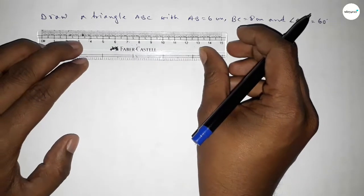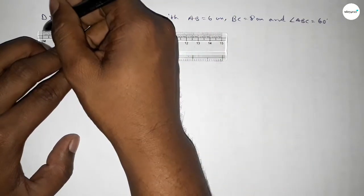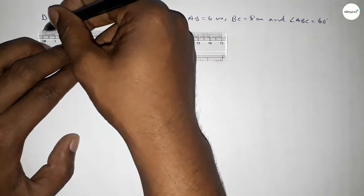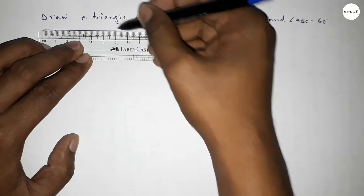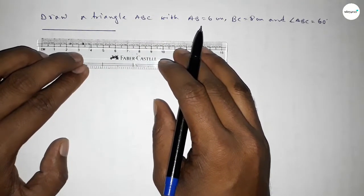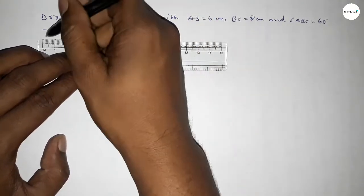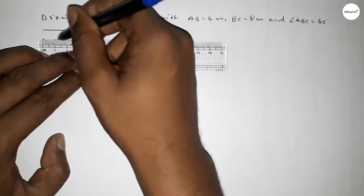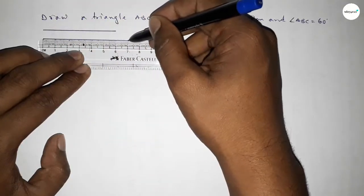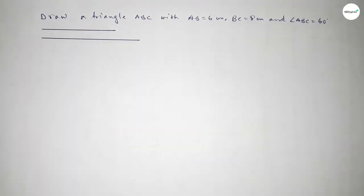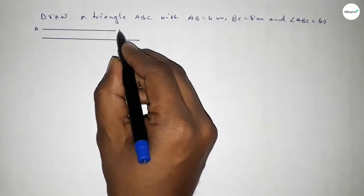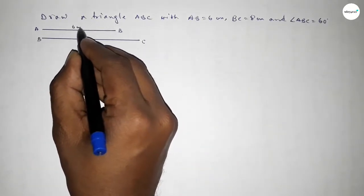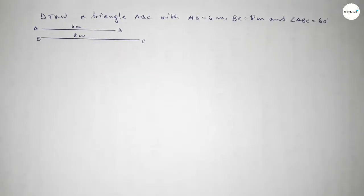First of all, we have to draw a line of length 6 centimeter — this is 6 centimeter. Then drawing another line of 8 centimeters: 0, 1, 2, 3, 4, 5, 6, 7, 8 — this is the 8 centimeter line. This one is AB and this is BC: AB is 6 centimeter and BC is 8 centimeter.